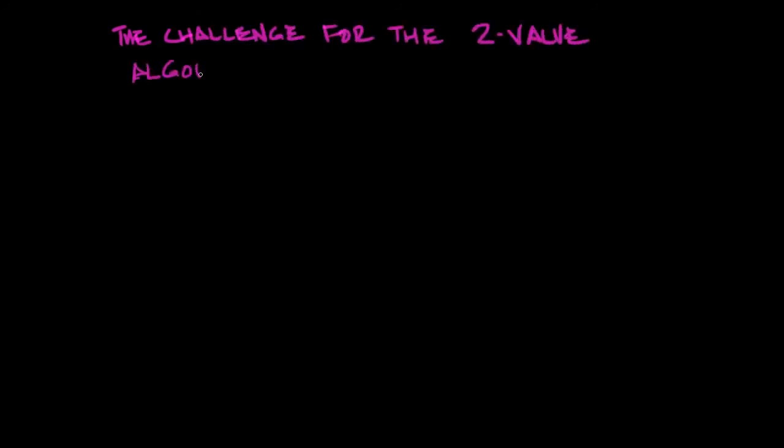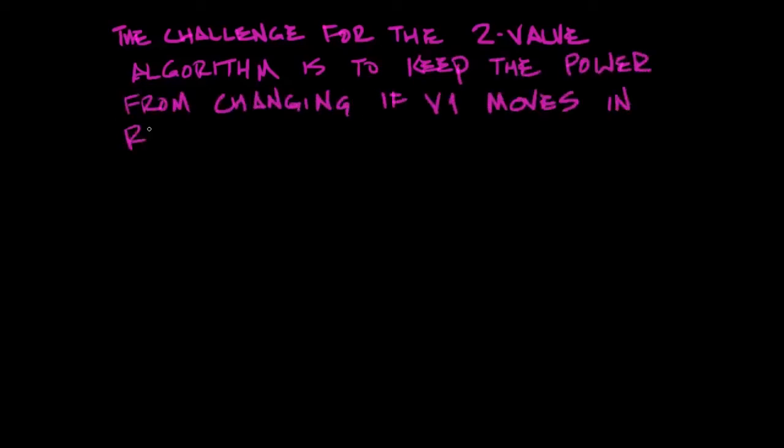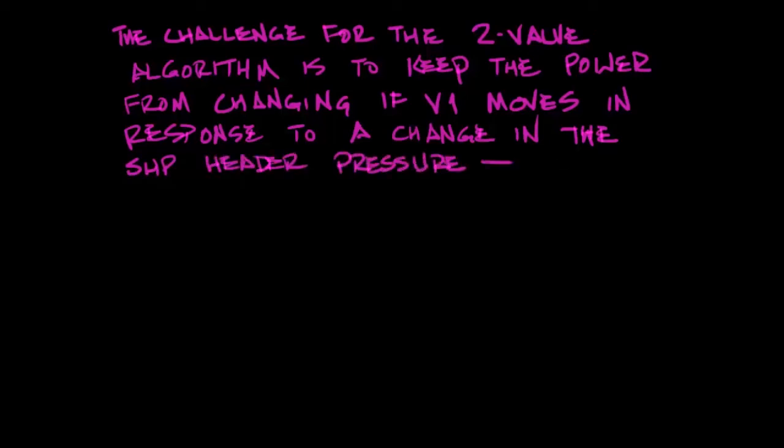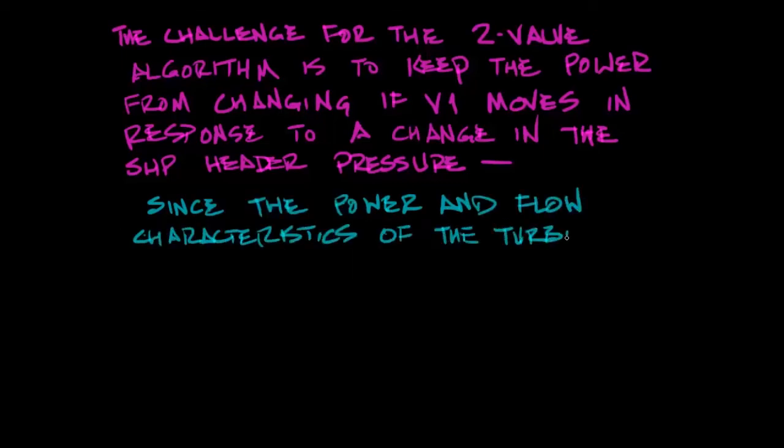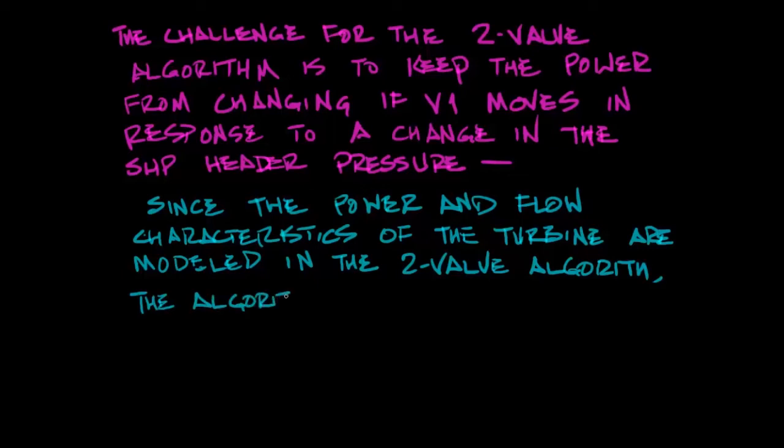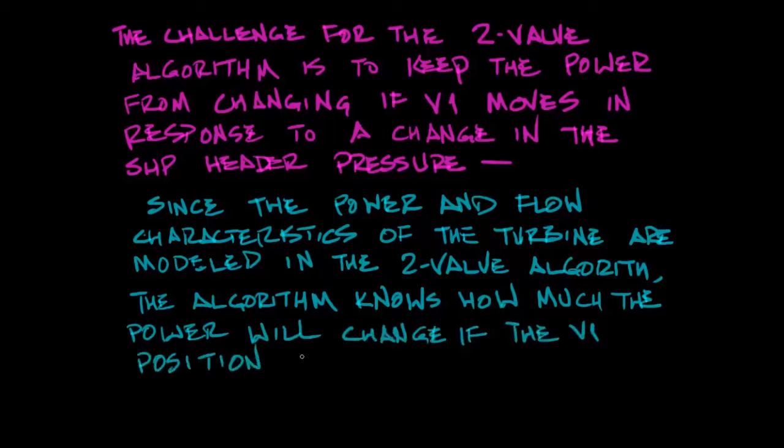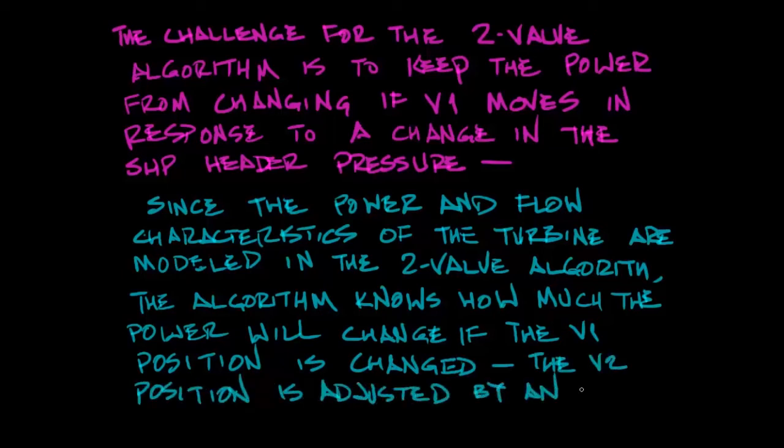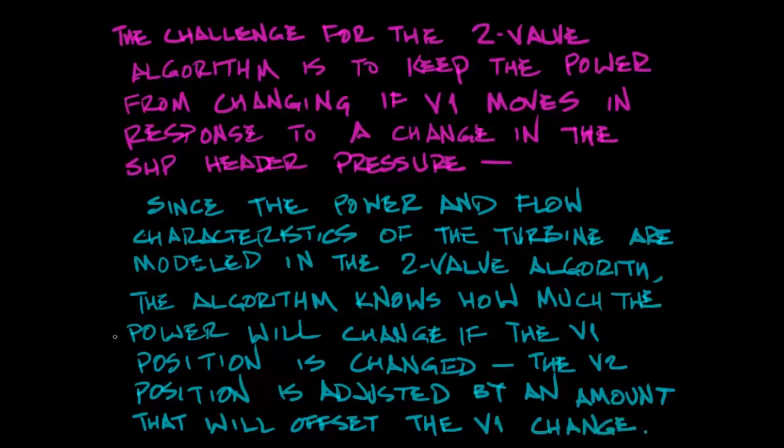The challenge for the two valve algorithm is going to be keeping the power from changing if V1 moves. If you move V1 in response to a change in the SHP header pressure that's going to change the power produced by the turbine. Since the power and flow characteristics of the turbine are modeled in the two valve algorithm it's going to know just how much the power is going to change based on any change in V1. That means the V2 position can be adjusted by an exact amount that will offset the change that took place at V1.